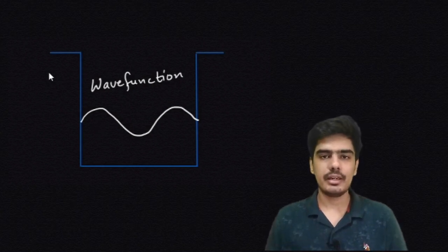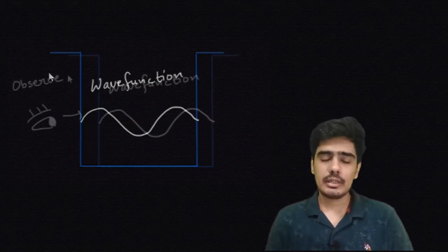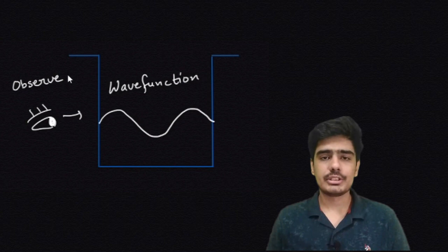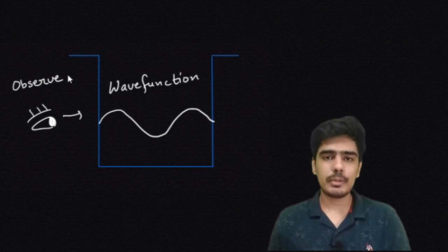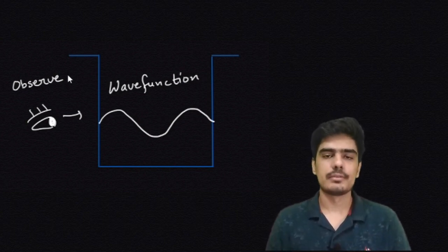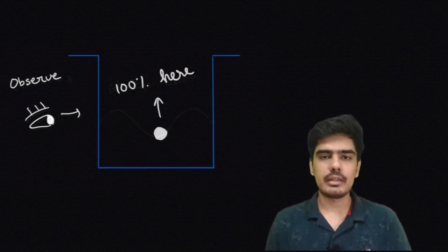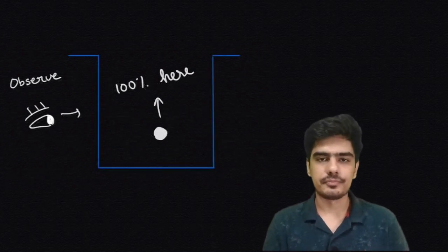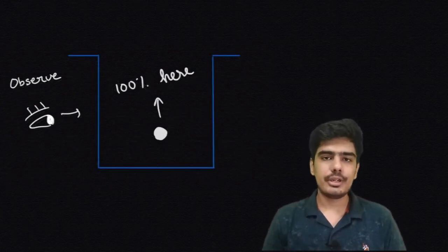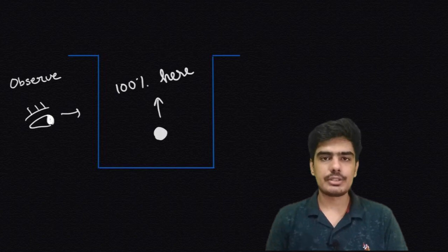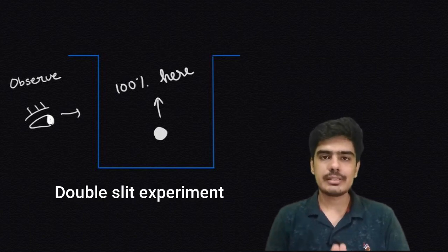But this is valid until we do a measurement. At the time we observe the particle, the wave function of the particle collapses, and now we can say that the particle is here. In this video we are going to discuss this weirdness using the double slit experiment.